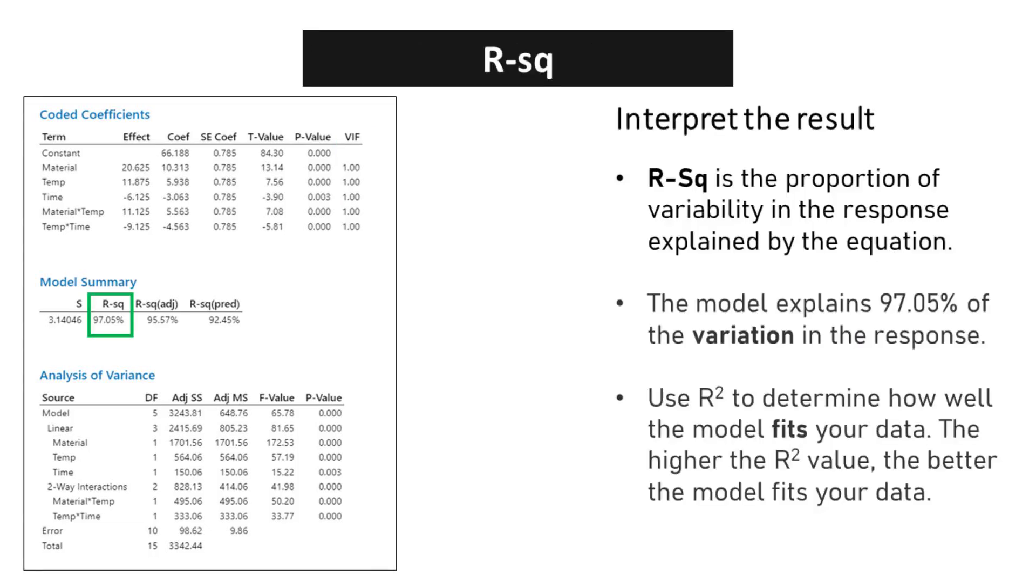The coefficient of determination, commonly known as R-squared, is a significant statistical metric used to gauge the extent to which the variation in the dependent variable is explained by the regression model. In the context of the specific model being discussed, it is reported that the R-squared value is 97.05%. This means that the model accounts for 97.05% of the variation in the response variable.